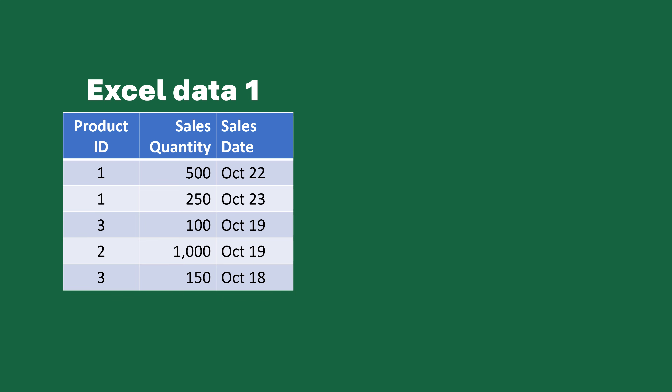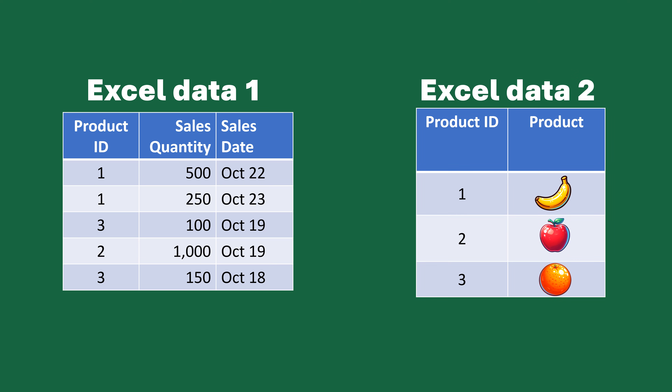Many times when someone has these product IDs, you're not quite sure what those products are. They could be something as simple as: product 1 is a banana, 2 is an apple, and 3 is an orange. But when you look at the data on the left, you may not realize that because you could end up having hundreds or thousands of different products. So it's something you might want to have more information about in your main sales table, and this is where VLOOKUP and XLOOKUP can help.